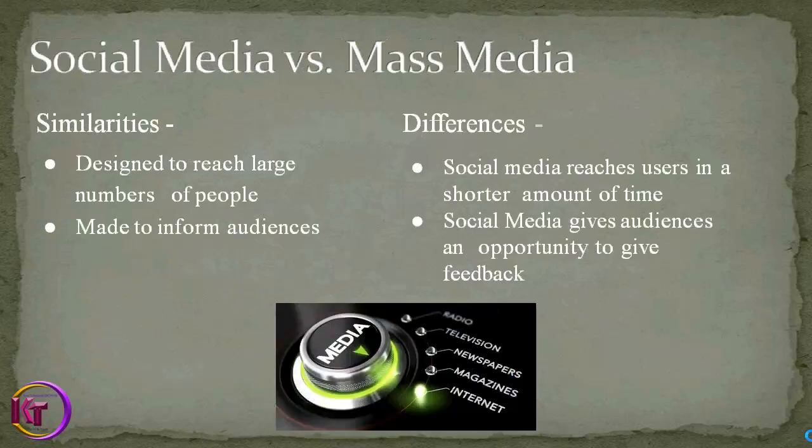Now let me explain the difference between social media and mass media. Mass media includes television, newspapers, internet, magazines, and radio. The similarities are that both are designed to reach a large number of people, and both are made to inform audiences.